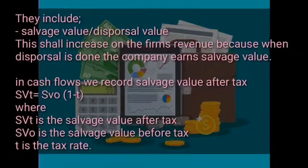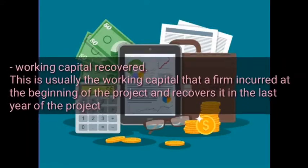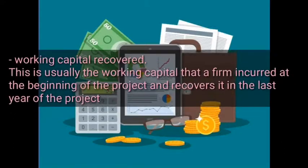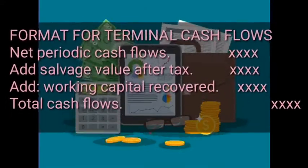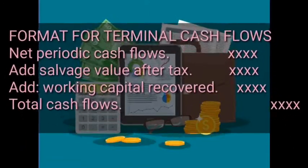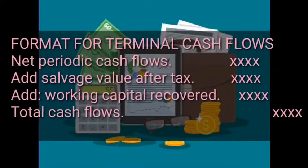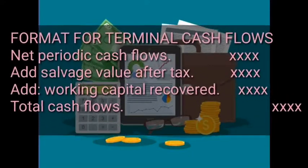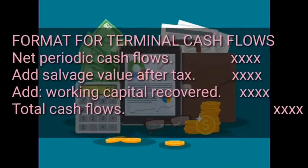The second terminal cash flow is working capital, which is invested at the beginning of the project and recovered in the last year of the project. To calculate total terminal cash flows: start with net periodic cash flows from intermediate cash flows for the last year, then add salvage value after tax, then add working capital recovered, to get the total terminal cash flows.